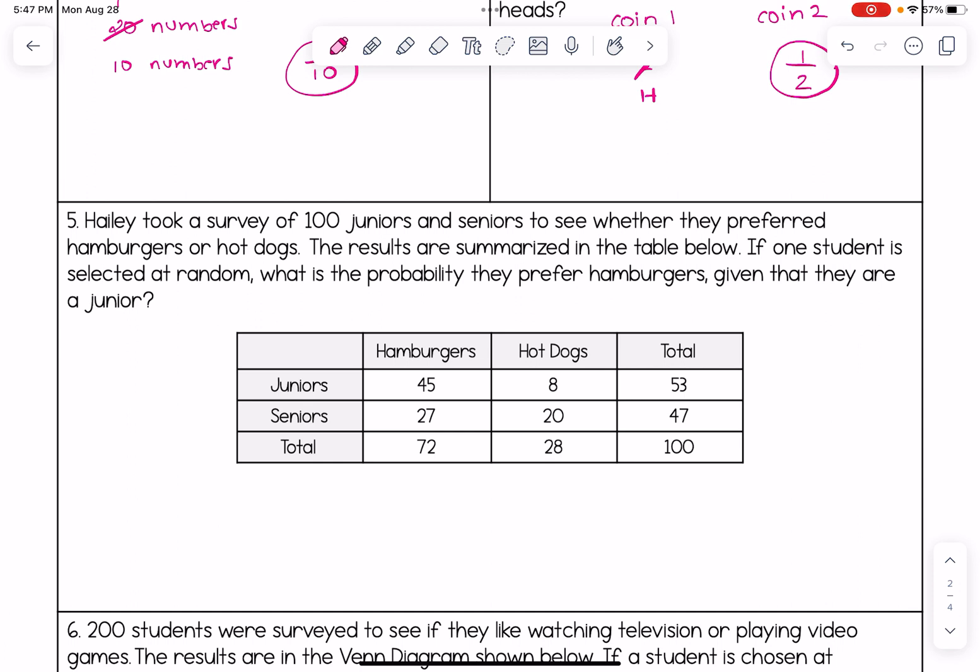In the next row, seniors, 27 of them picked hamburgers as their preference. 20 picked hot dogs, and 47 seniors were surveyed in total. And then the total row just tells you how many total people picked hamburgers, how many total picked hot dogs, regardless of what grade they're in. So now let's look at this here. This is like our whole sample space, and now we're going to narrow it down or reduce it. We want to know what's the probability they prefer hamburgers given they are a junior. So all we care about is this part that they are juniors. You can almost ignore and cross this information off because we're not concerned in this problem about what happens if they're a senior or what the totals are.